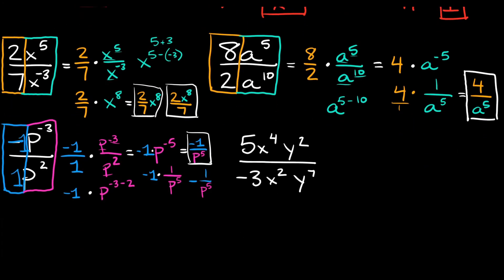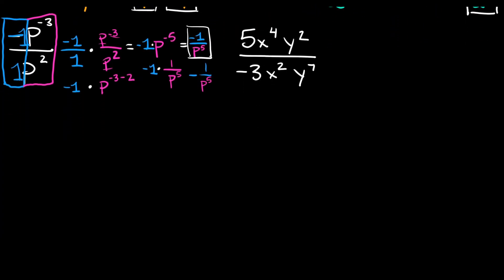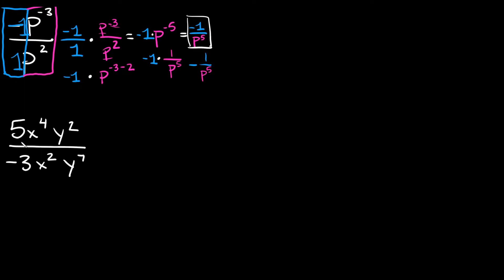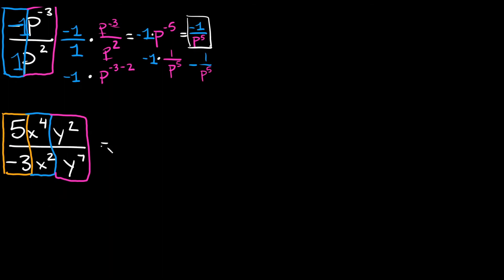So let's do this last example — I'm going to scroll down just to give myself some extra room. So here we have an ugly looking thing: we have 5x to the 4th y squared over negative 3 x squared y to the 7th. Again, you want to separate all of your like terms — I want to separate the numbers from the x's, and I also want the y's to be by themselves. Everything is going to have its own little fraction. So this is going to be equal to 5 over negative 3, multiplied by x to the 4th over x squared, multiplied by y squared over y to the 7th.